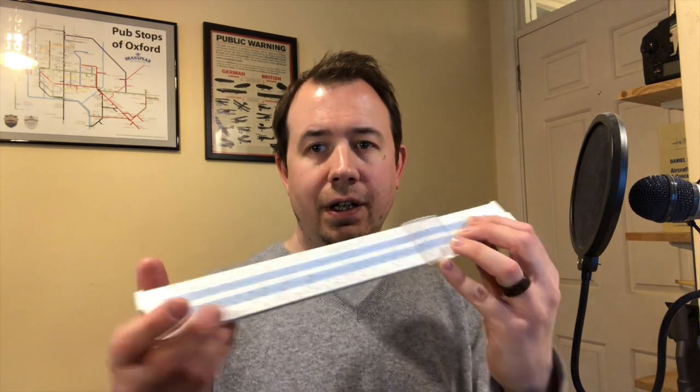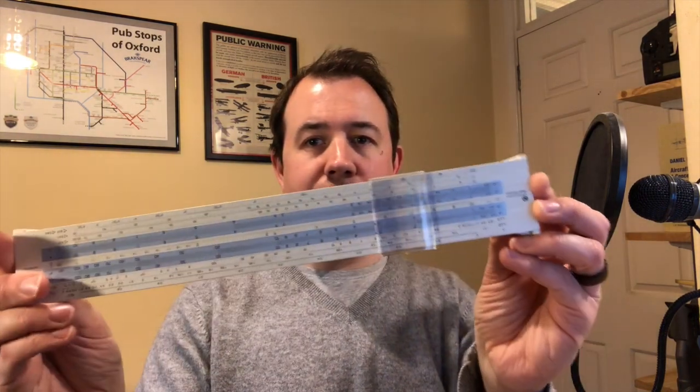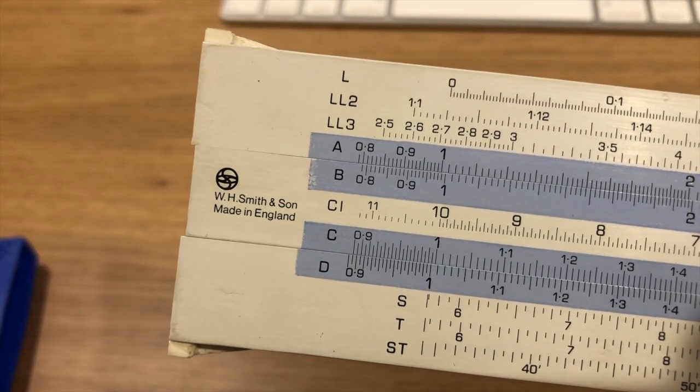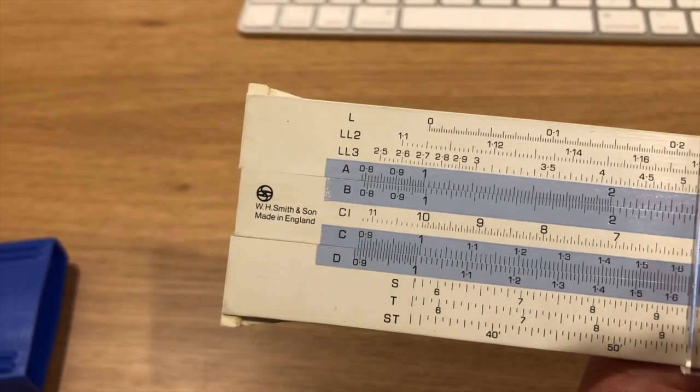So this is my slide rule. It comes in this protective plastic case, and it's actually made of plastic. There's nothing particularly special about this, other than it was given to me by my dad. He bought it in the 1970s. And in fact, if you look closely, it says WH Smith and son, and I think they're still around. Presumably, this is what you would go and buy before you could buy a pocket calculator.